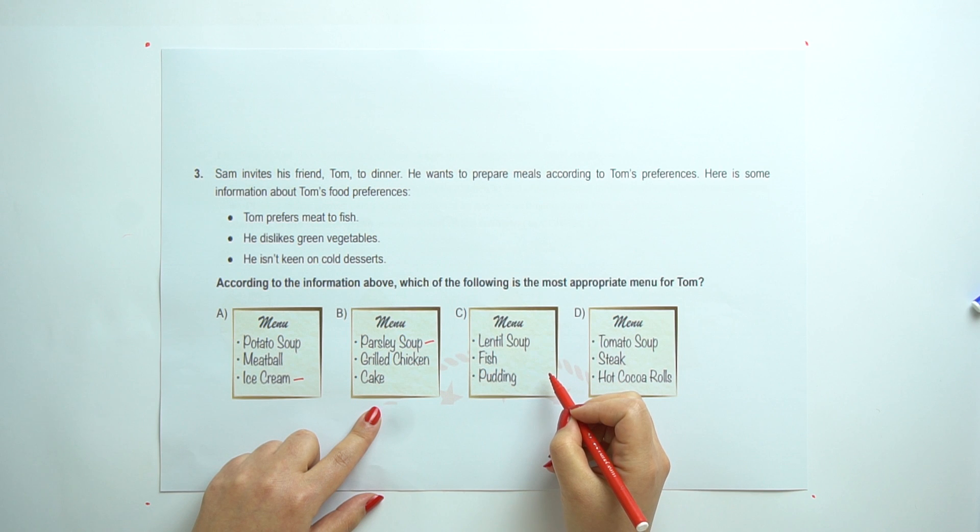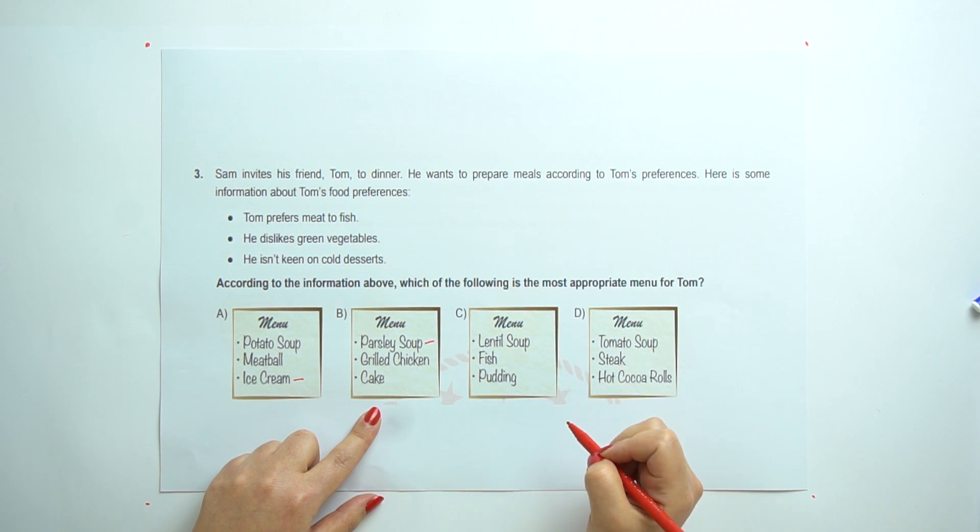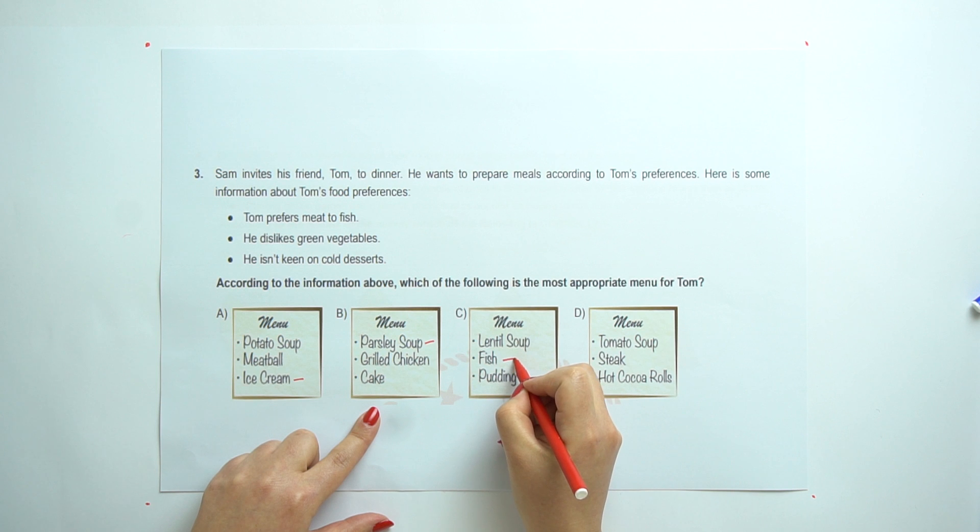And C. Lentil soup, fish and pudding. So, here is the fish. He doesn't prefer.